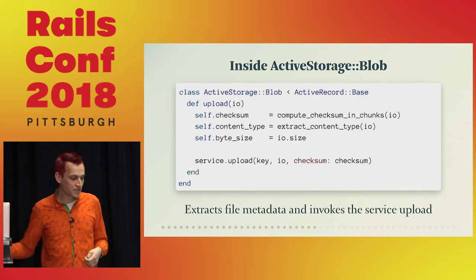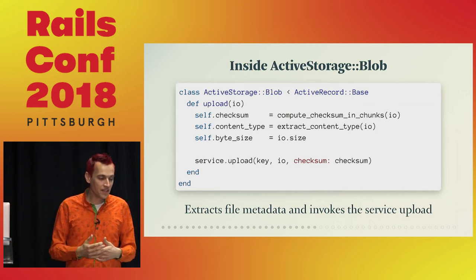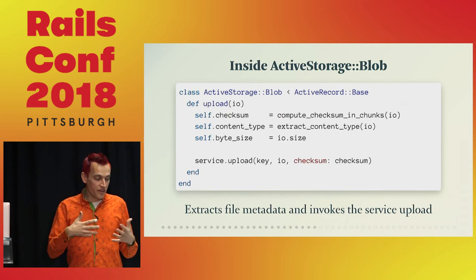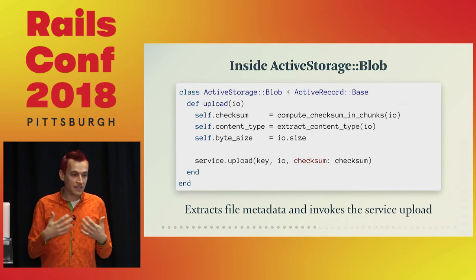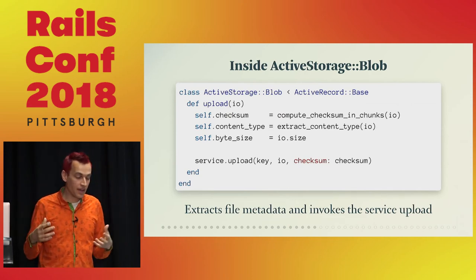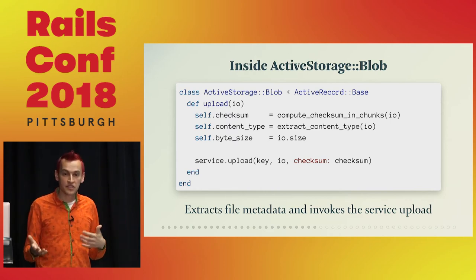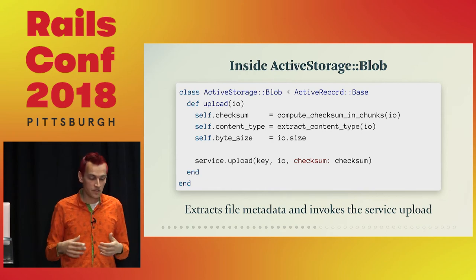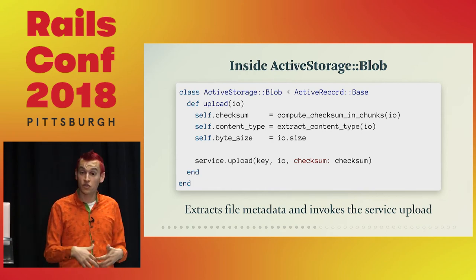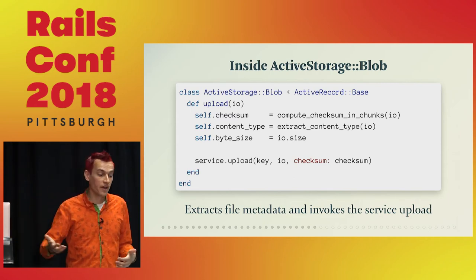I'll show you one method of ActiveStorage::Blob — the upload one. As I said, it's extracting all this information: it calculates a checksum from the bytes, extracts the content type either from the extension, MIME type, or just the first bytes, extracts the size, stores all this information, and then it calls a service to actually store the file.